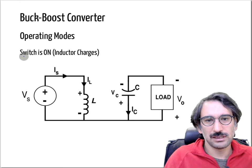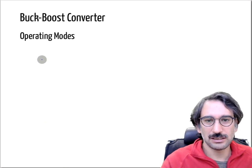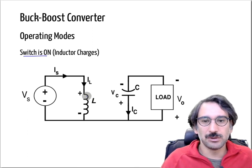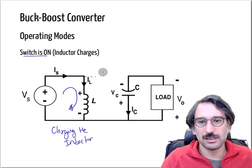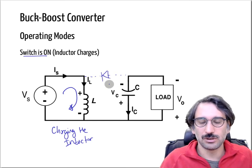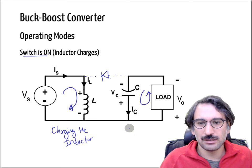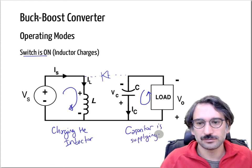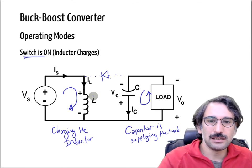There are two main operating modes. The first is when the switch is on — you close the switch and charge the inductor, similar to the boost converter. At the same instant, the diode is in reverse blocking mode. During this period, the capacitor alone is supplying the load.